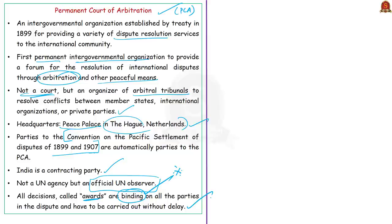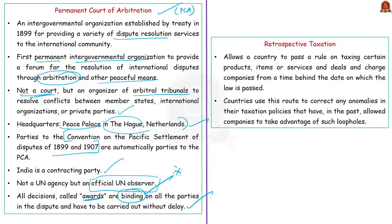The two cases against India came before PCA due to India's retrospective taxation issue. Retrospective taxation refers to taxation that allows a country to pass a rule taxing certain products, items, services, or deals, and charge companies from a time behind the date on which the law is passed — to correct anomalies in taxation policies that allowed companies to exploit loopholes.